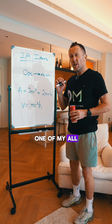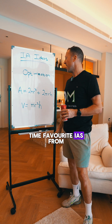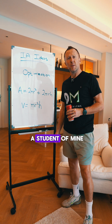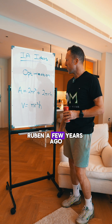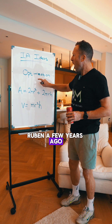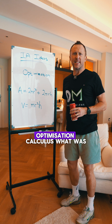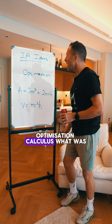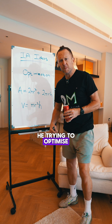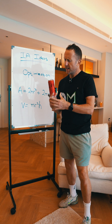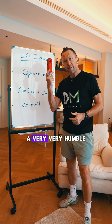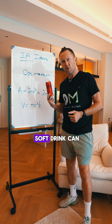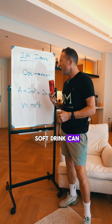One of my all-time favorite IAs from a student of mine, Ruben, a few years ago — optimization, calculus. What was he trying to optimize? A very, very humble soft drink can.